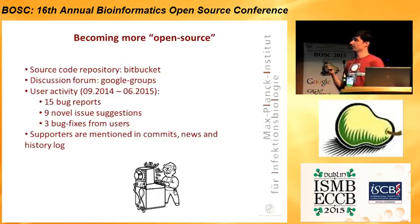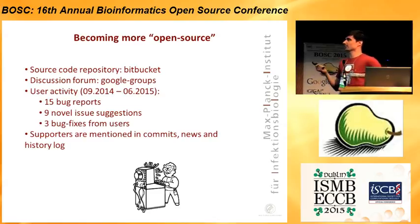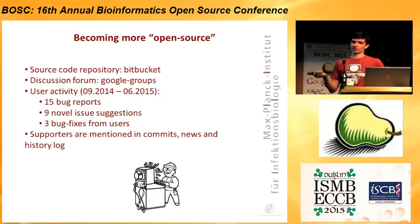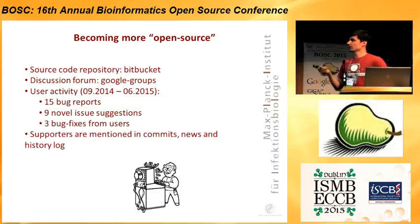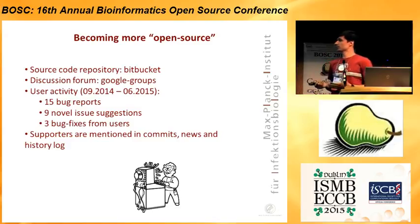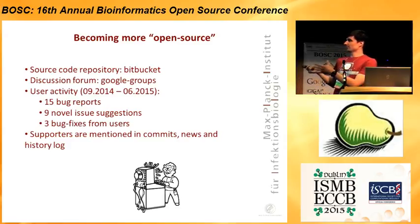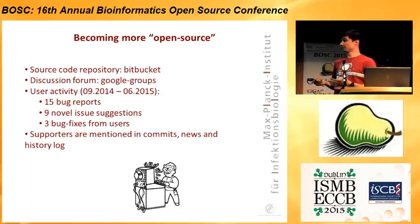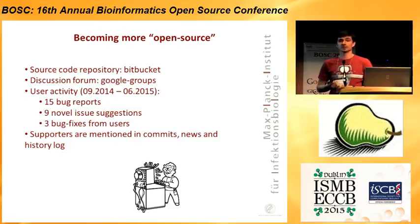This is almost everything, but the most important thing I would like to mention is that Qualimap is becoming more and more open source. There is a source code repository, there is a discussion forum, and the number of downloads increased significantly. After release of the second version, user activity increased a lot — there were bug reports, novel suggestions, and even bug fixes from users. I wanted to put everyone on this slide, but there is not enough space to put all the names. I just want to thank all the people who were participating and continue participating. All supporters are mentioned in commits, news, and in the history log.